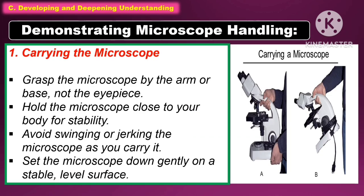The following demonstrates microscope handling. The first step is carrying the microscope. Grasp the microscope by the arm or the base, not the eyepiece. Hold the microscope close to your body for stability. Avoid swinging or jerking the microscope as you carry it, and set it down gently on a stable and level surface.